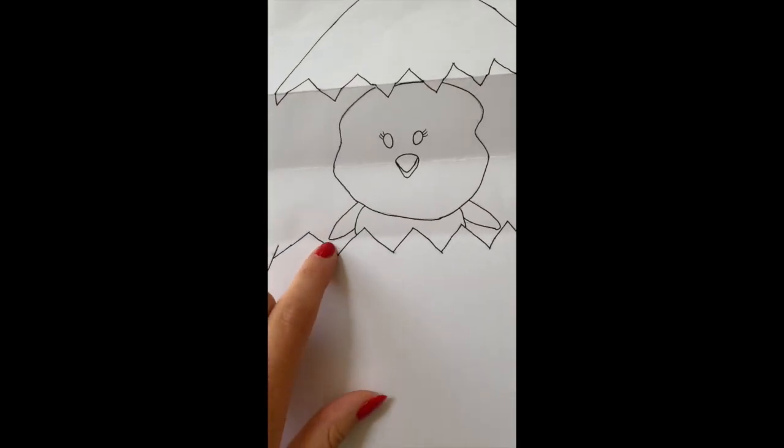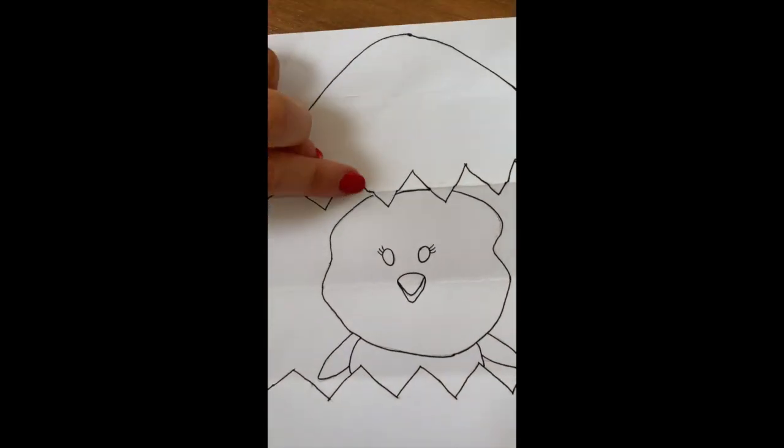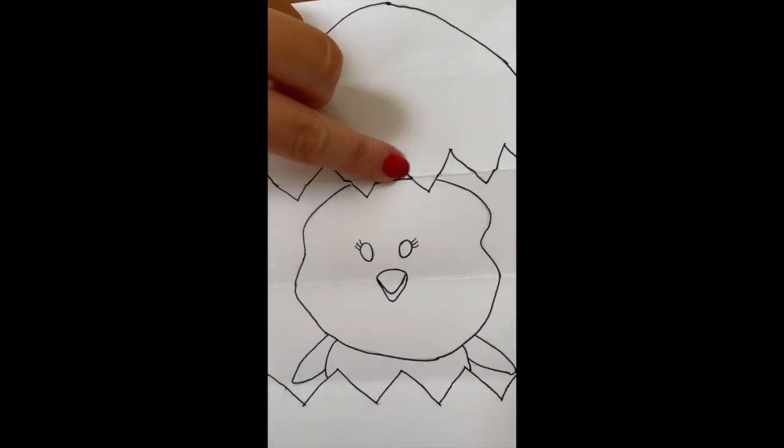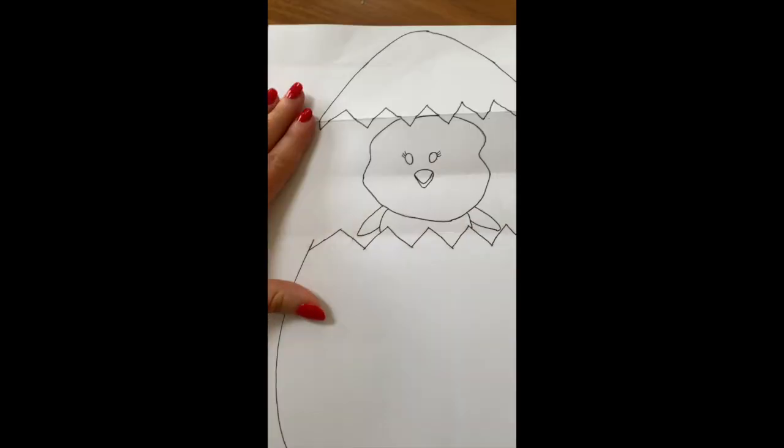I've drawn out my chick and was really careful with the wings so they didn't go below the 15 line, and at the top of his head that it didn't go above the 7.5.